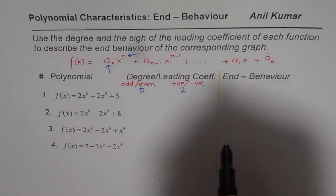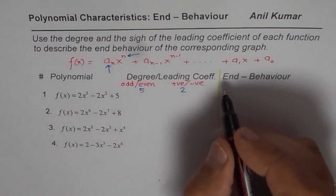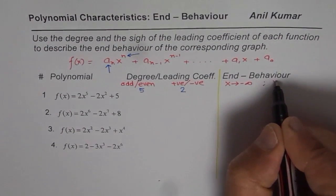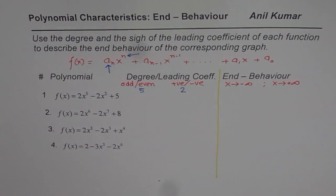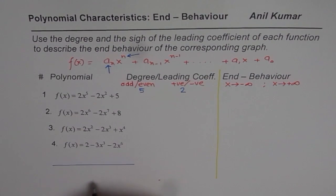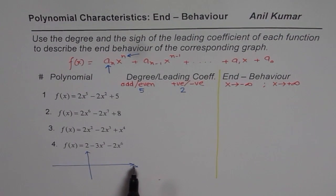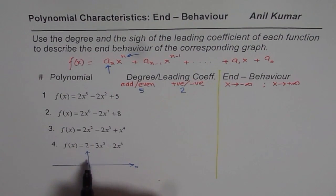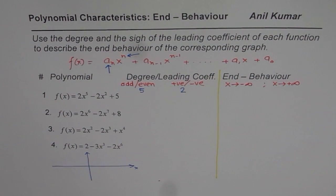What is end behavior? End behavior really means how the y-value of the function, or f(x), will change when x is going towards negative infinity and when x is going towards positive infinity. Those are the two ends. So when x becomes negatively large, what happens to f(x)? And what happens to f(x) when x becomes positively large? We have already identified the degree is 5 and the leading coefficient is 2.